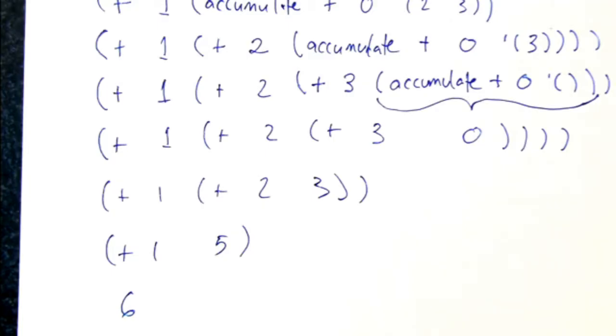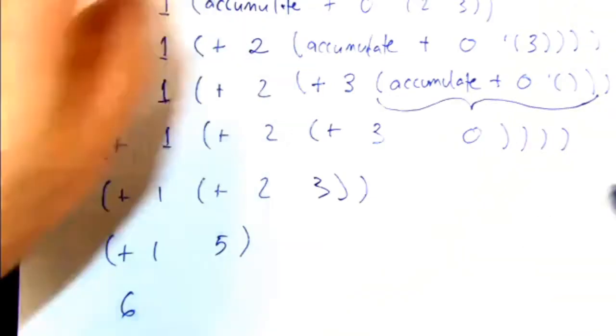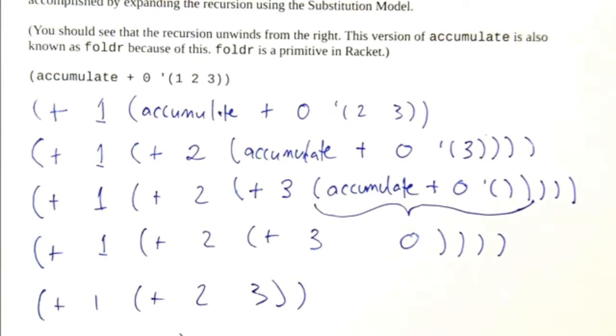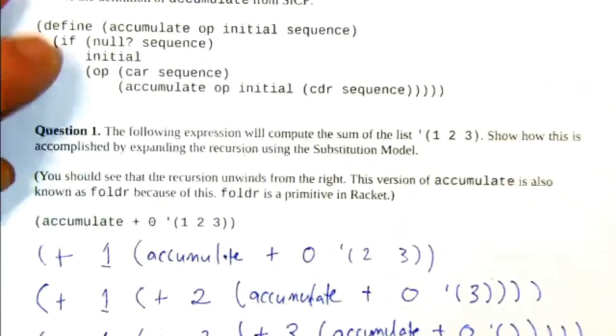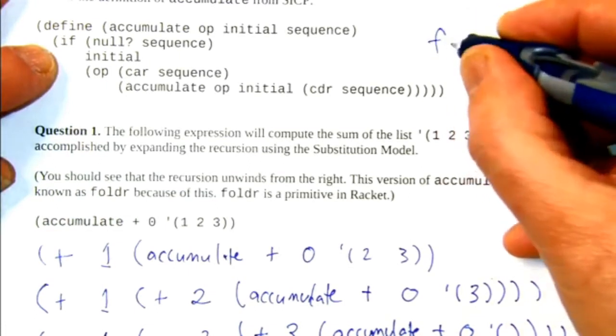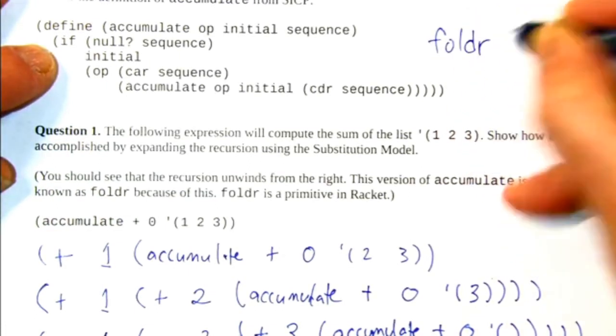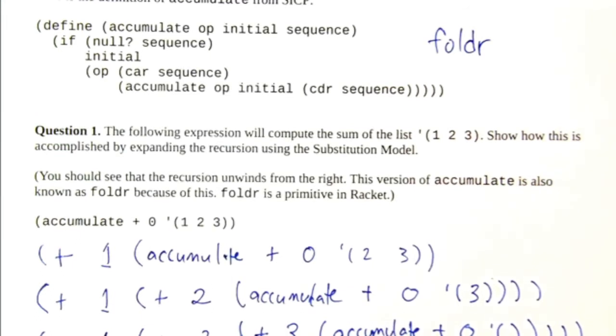So that's this structure of recursively unpacking and then recombining from right to left, that's the model for all accumulations that we're going to be dealing with. And in fact, what I just stated is already written down. So the recursion unwinds from the right, from right to left, and there is a synonym for this accumulated procedure that's given in the book. So in racket, fold R. So fold the operations from right to left.